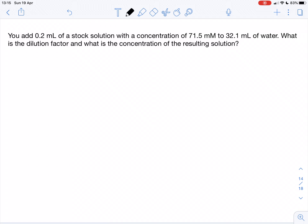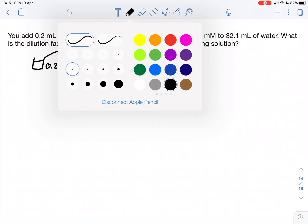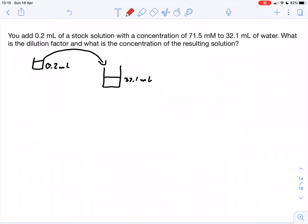What we do is we take 0.2 milliliter of our stock solution and add it to a volume of 32.1 milliliter of water. So this would actually look a little bit like this. So this is what we have here.